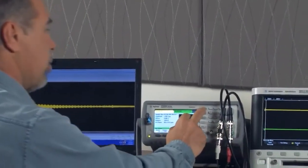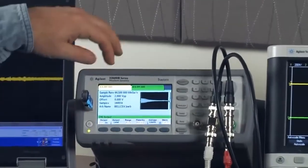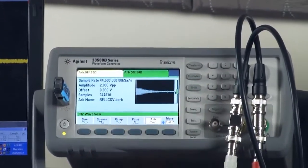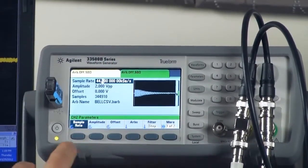So on the function generator, I've just loaded the waveform onto channel one. I'll show you how to do that. It's very easy. You press waveform, ARB, ARBs.